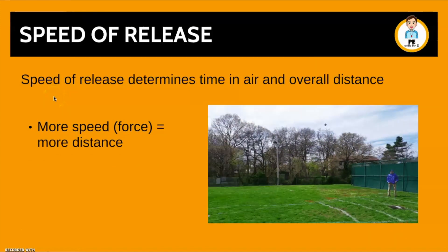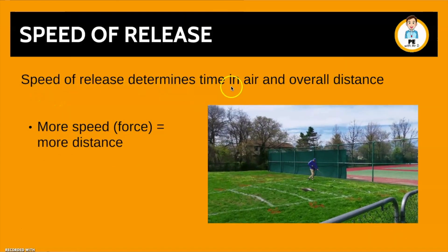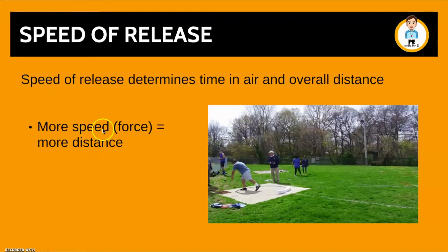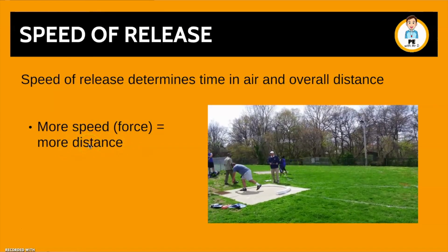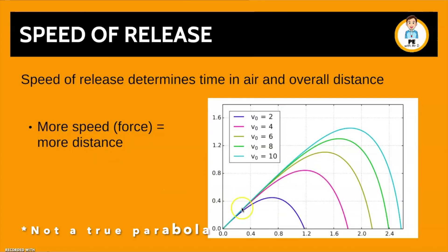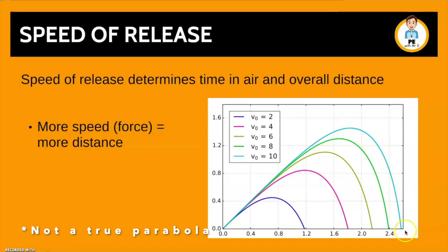Finally, we have the speed of release. Very logically, speed of release determines the time in the air and overall distance — more speed equals more distance. This graph sums it up nicely. All the different coloured lines represent throws with different speeds of release, all using the optimal 45-degree angle. The dark blue line has a slow speed of release, gaining around 1.2 metres, while the turquoise line goes the maximum distance because it has the highest speed of release.